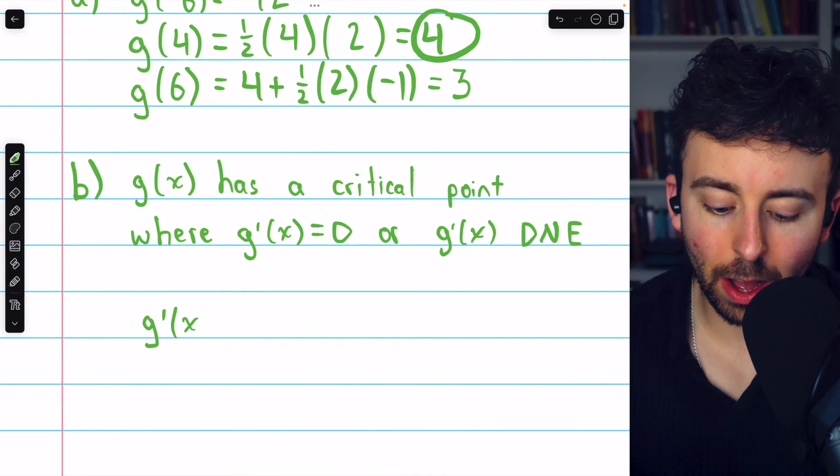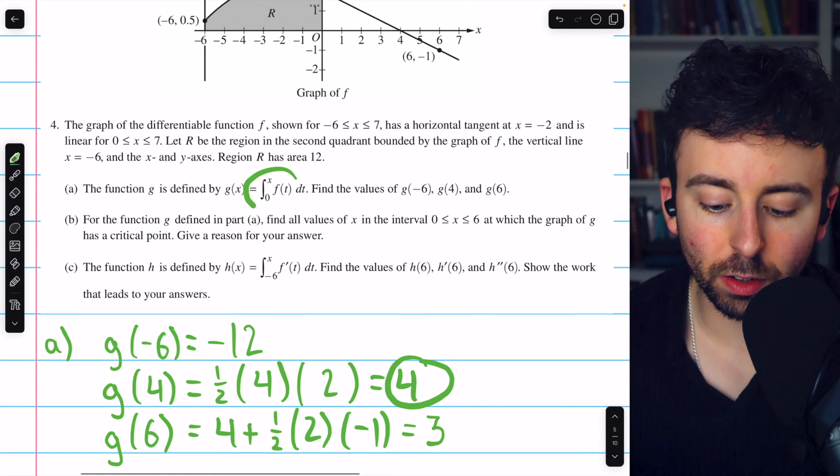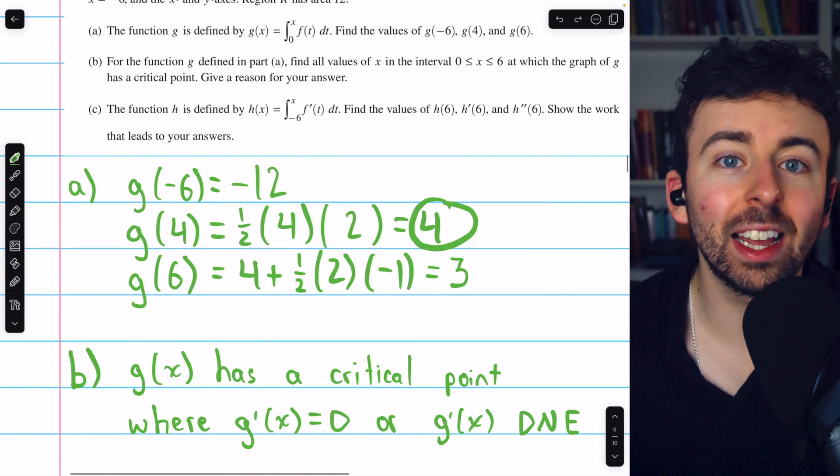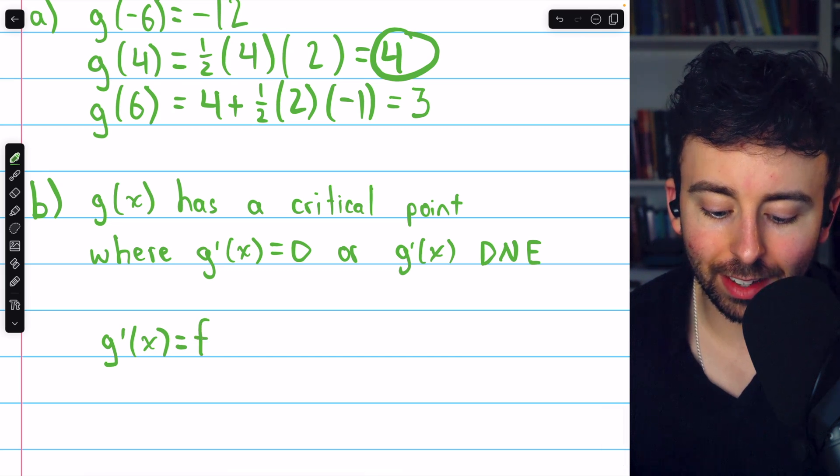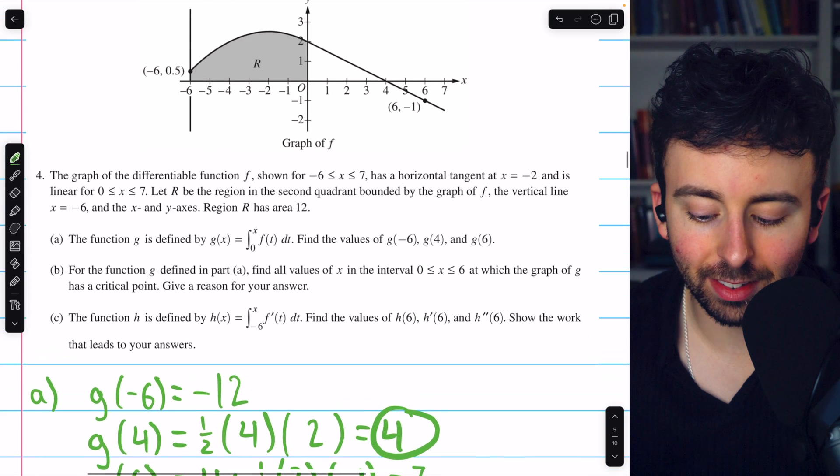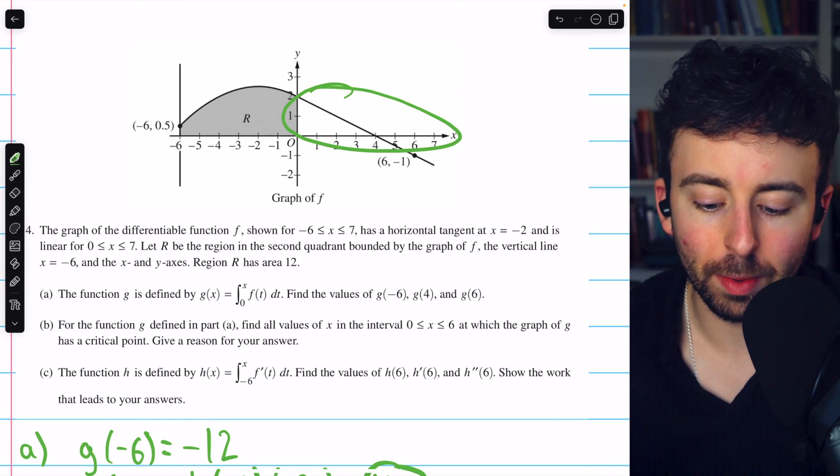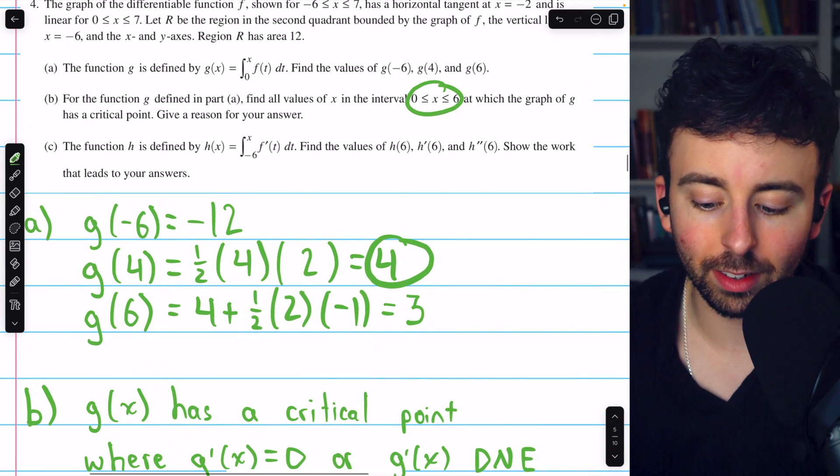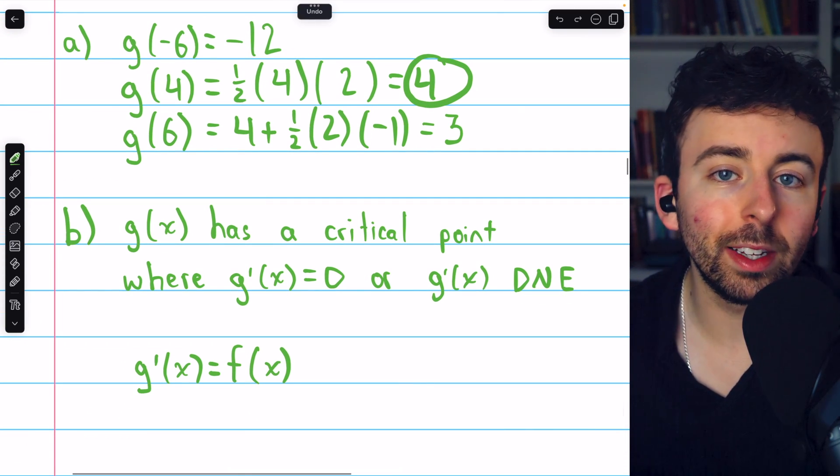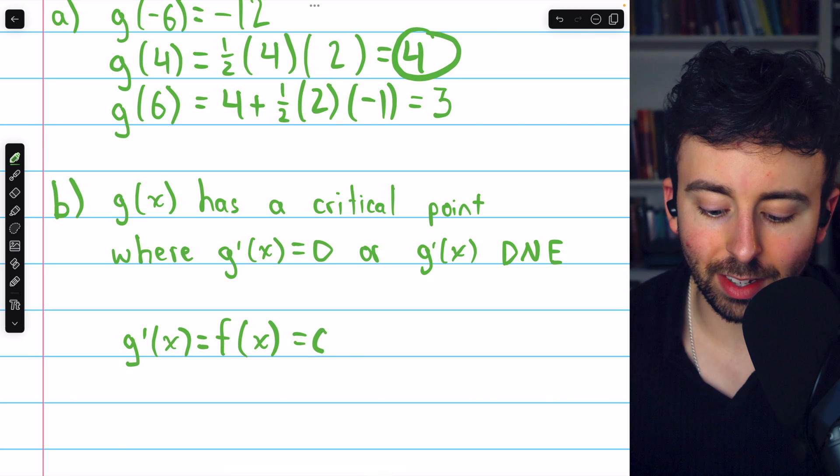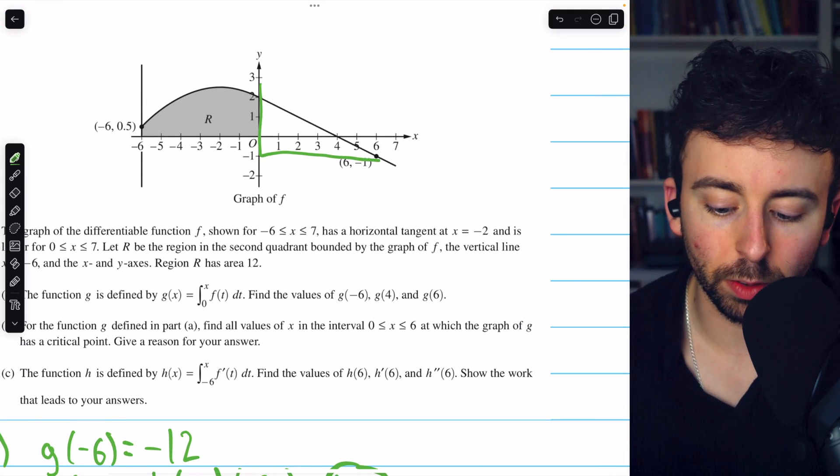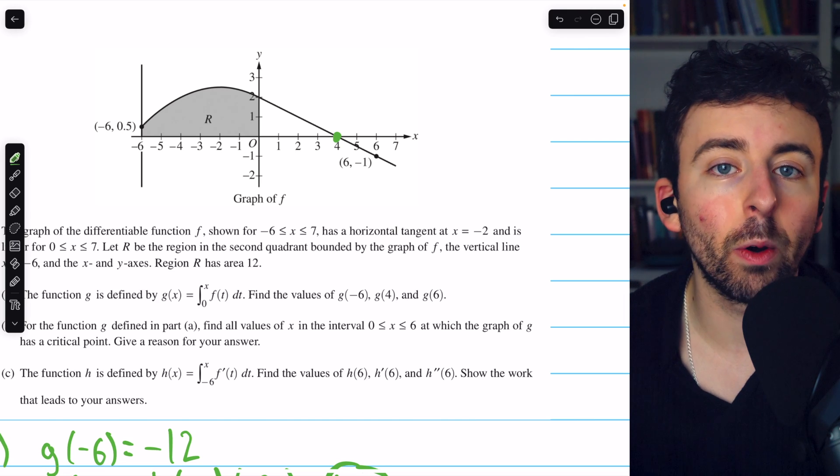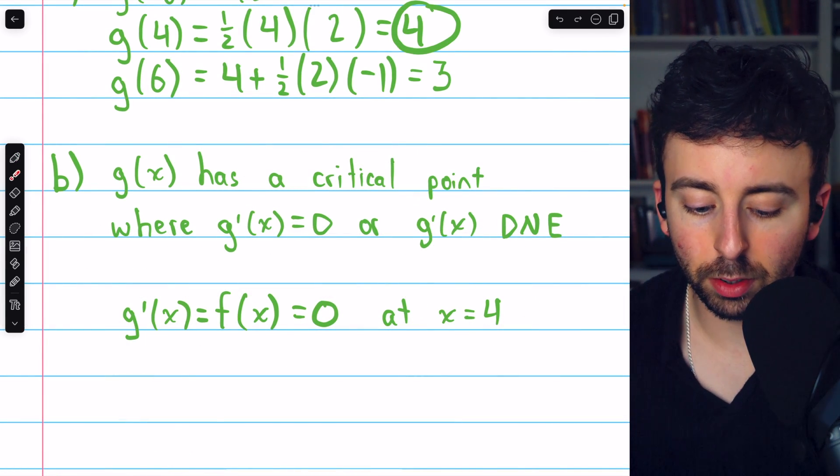But we also know from the fundamental theorem of calculus, since g is the integral of f of t from t equals 0 to t equals x, the derivative of g just cancels out that integration. And so g prime of x is actually just f of x. And f of x exists on this entire interval from 0 to 6. We're looking at its graph. It certainly exists. So there's not going to be anywhere on the interval from 0 to 6 where g prime does not exist. Hence, the only places we have to look for critical points are where f of x is equal to 0. And from the graph, again focusing on the interval from 0 to 6, we see that f is equal to 0 at x equals 4. So that is our one critical point. That's the only critical point. And so that completes our solution to part b.